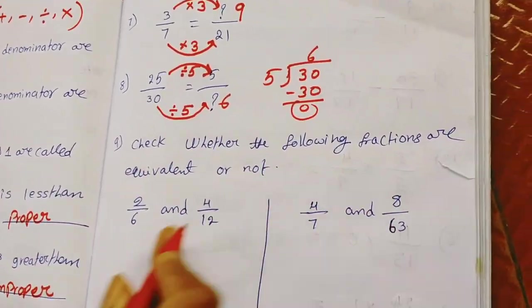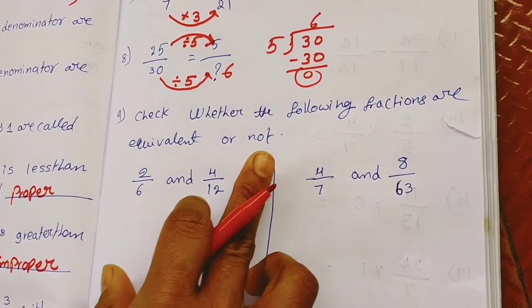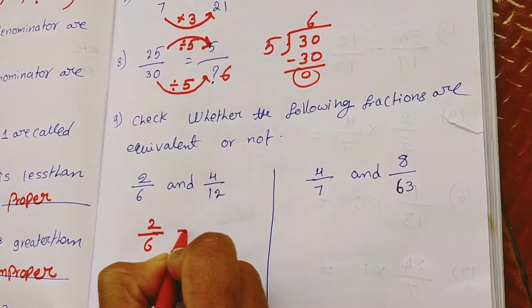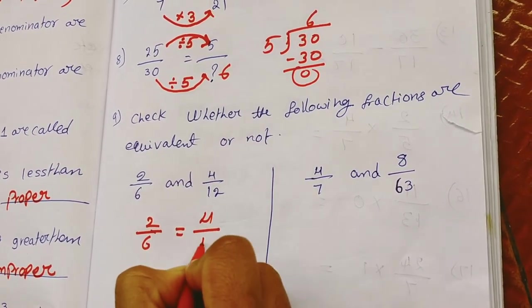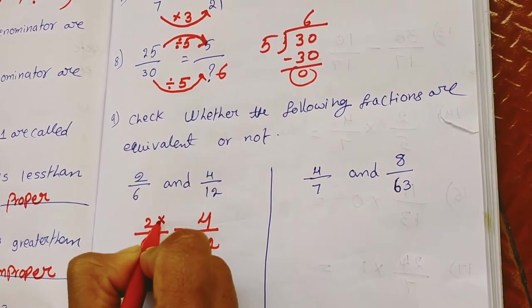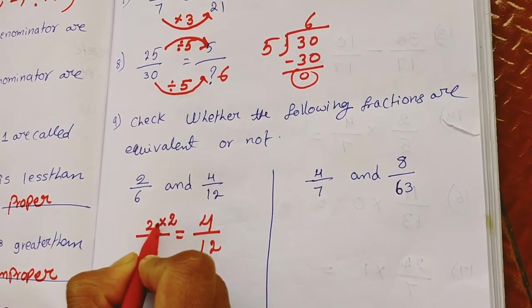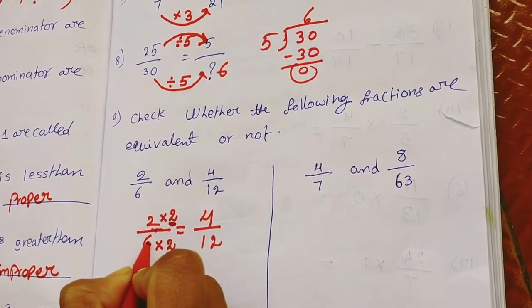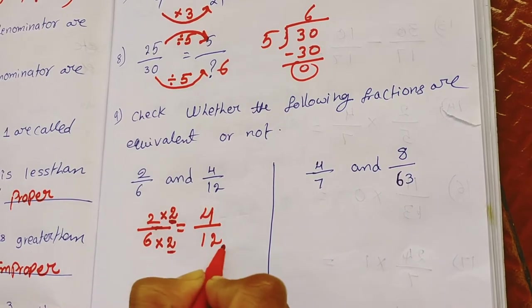Next, check whether the following fractions are equivalent or not. Here what will I give? 2 by 6 equivalent equals 4 by 12. Here in 2 is multiplying with 2. Then 2 times 2 are 4 is correct. Then in the same way, here also we have to multiply with 2. So 6 times 2 are 12.